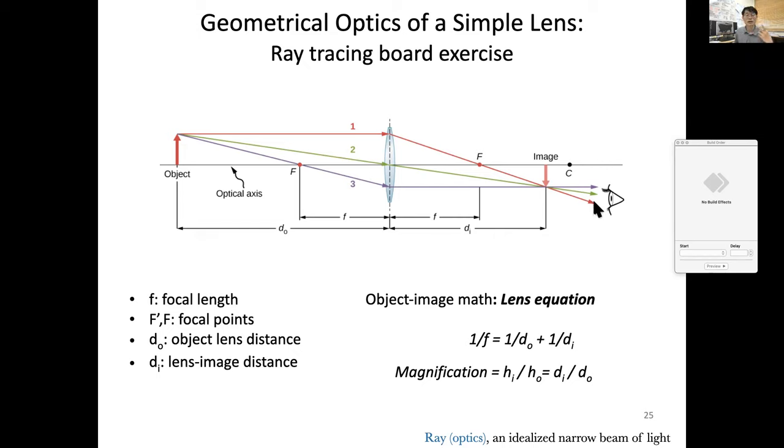In fact, for finding where the image is formed, you only need two rays. Remember, the rays coming out of this point should become a point here, so you just need one more ray. So let's say we send a ray to the center of the lens, and then it's symmetric, so it doesn't have to bend towards the equal direction.